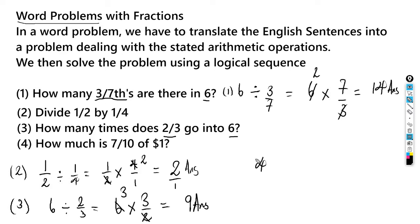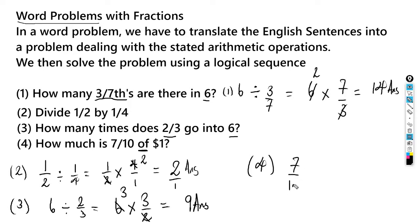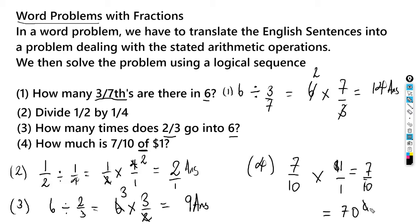The fourth one says: how much is seven over ten of one dollar? Remember, 'of' means multiply. So we get seven over ten multiplied by one dollar, which is one over one. Seven times one over ten times one gives us seven over ten, which is the same as 70 cents.